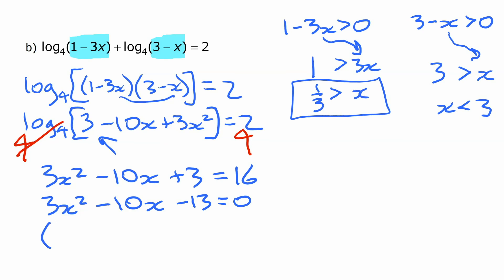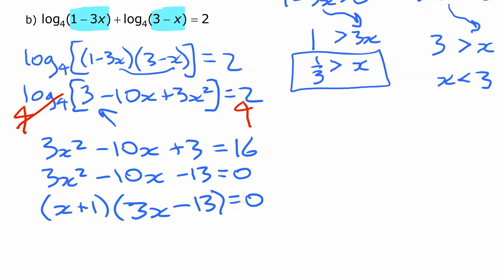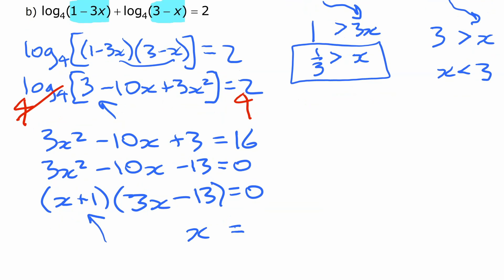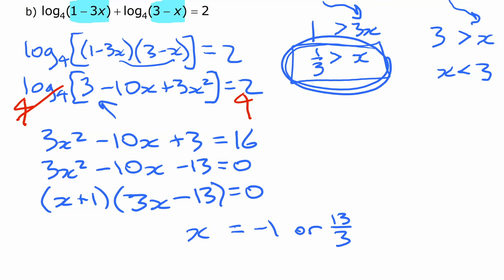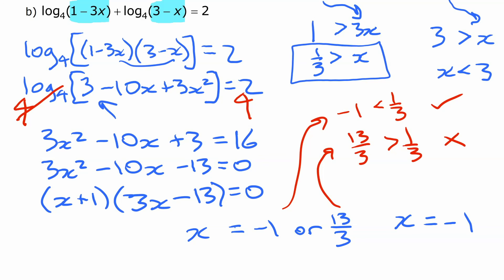That factors as x plus 1 times 3x minus 13 equals 0 — or you can use the quadratic formula. So our two solutions are x equals negative 1, or x equals 13 over 3. We check against our restriction: x must be less than one third. Negative 1 is less than one third, so that works. But 13 over 3 is definitely not less than one third — it's greater — so it doesn't work. There's only one solution: x equals negative 1. We reject 13 over 3 as extraneous.